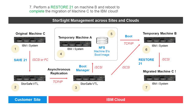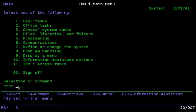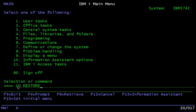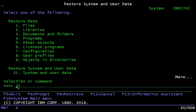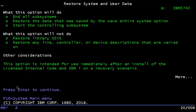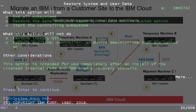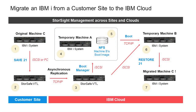The last step is for Machine B to do a Restore 21 operation, which will overwrite itself so that it becomes identical to Machine C that was running at the customer site. Here at the green screen console of Machine B, we perform a Go Restore operation — a Restore 21 of the system and user data. After the Restore 21 operation completes, Machine C is fully and skillfully migrated from the customer site to the MSP or IBM cloud.